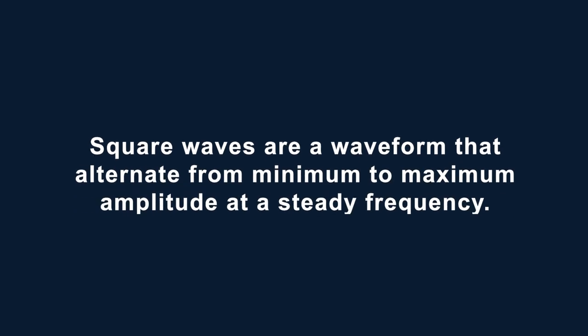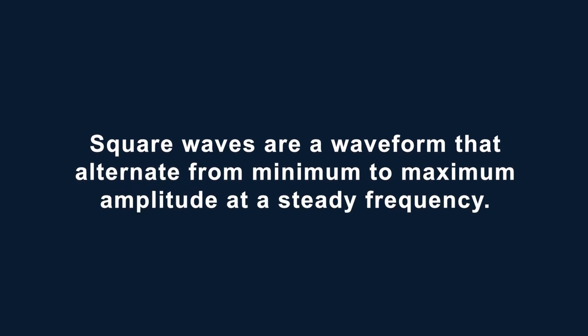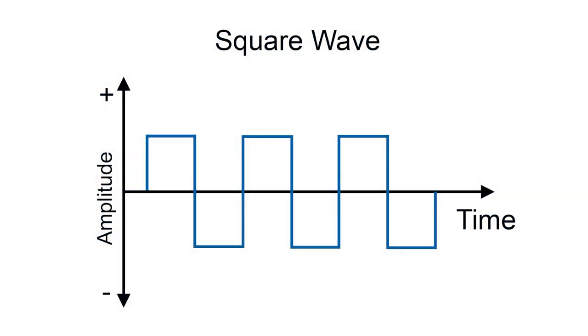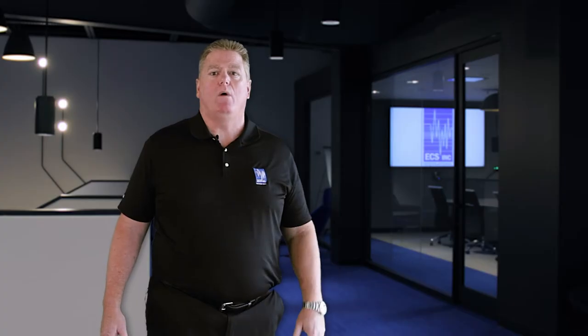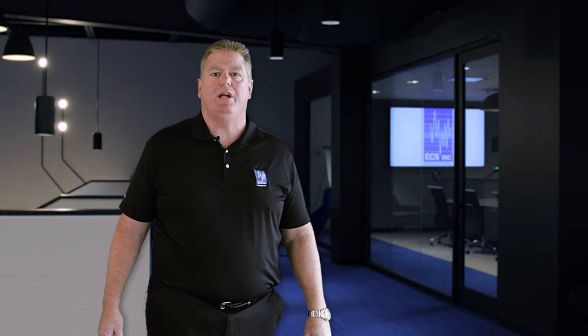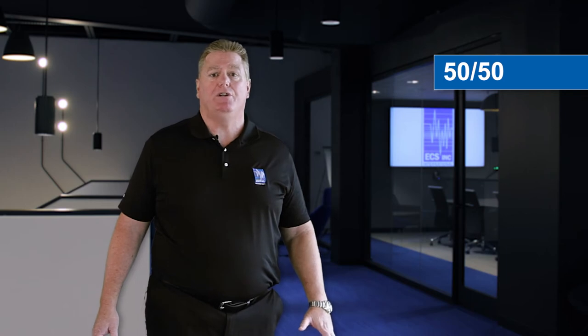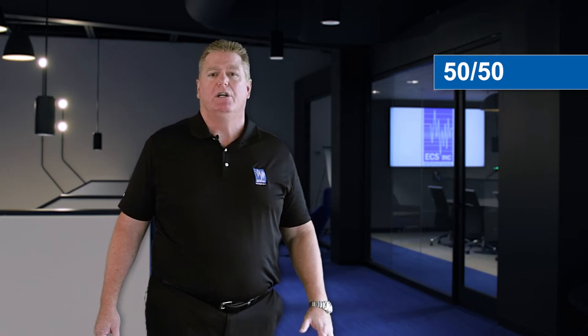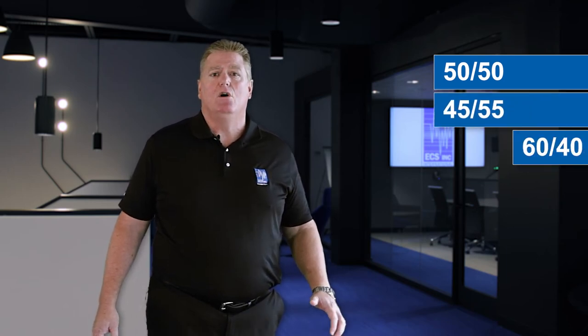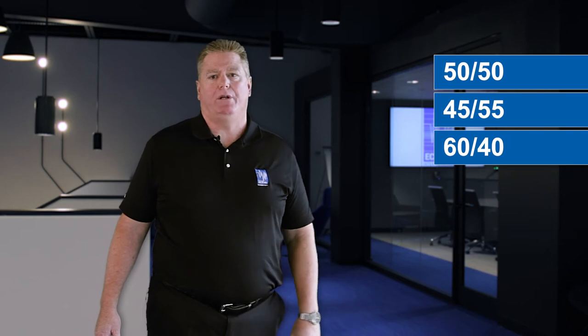In digital electronics, we see square wave outputs. Square waves are a waveform that alternates from minimum to maximum amplitude at a steady frequency. An ideal square wave would have the minimum and maximum periods at equal duration — this would be a 50-50 duty cycle. In practice, there will be some variation in duty cycles, so a 45-55 or 60-40 may be more typical.